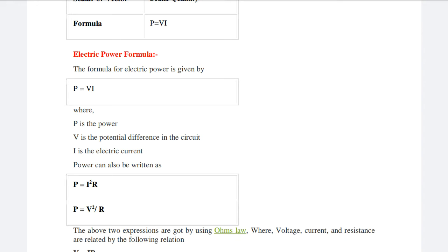We can write the power formula in another way. We know that according to Ohm's law, V equals to IR. So if we put V equals to IR in P equals to VI, then P equals to I square R.